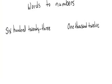Let's say you were asked to change words into numbers. How do you do that? Well, read the words — 623. So I need a 6 in the hundreds place, and then I have 23. So there you go.